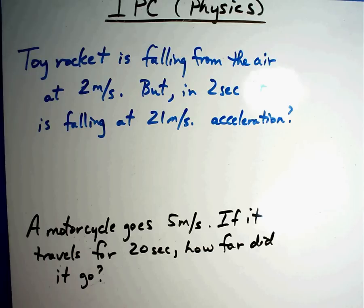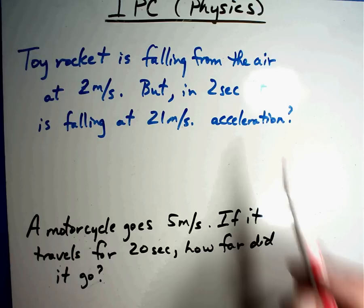All right, the toy rocket is falling from the air at 2 meters per second, but in 2 seconds it is falling at 21 meters per second. What is its acceleration?